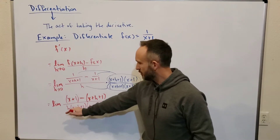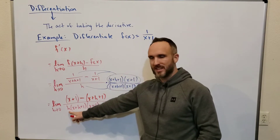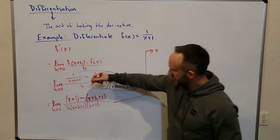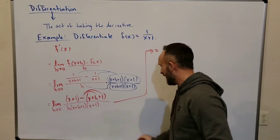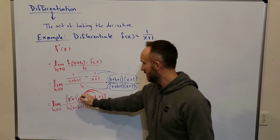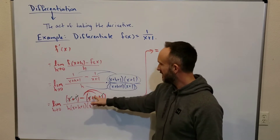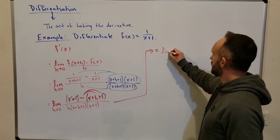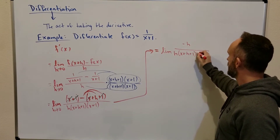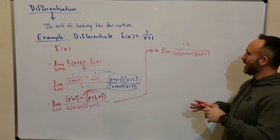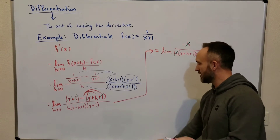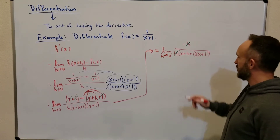Our goal is to cancel this h so we can do direct substitution. Let's distribute the negative up here on the top. We can see that we have positive x minus x, which is 0. We have positive 1 minus 1, which is also 0. So all that remains is negative h. So we have the limit: on top we have negative h, and on bottom we have h times (x+h+1) times (x+1). Now we've gotten it to where the h's will cancel. And because the h is gone, I'll go ahead and write the limit as h goes to 0, because now we're going to do direct substitution on any h's that remain.